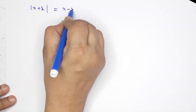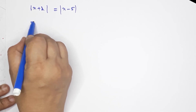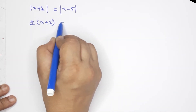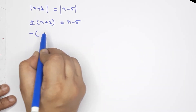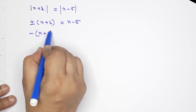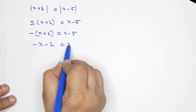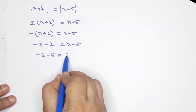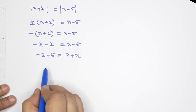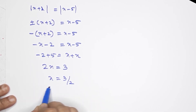Next problem: modulus of x plus 2 equals x minus 5. The plus condition: x plus 2 equals x minus 5 — does not exist. The minus condition: minus x minus 2 equals x minus 5, so minus 2 plus 5 equals x plus x, giving 2x equals 3, x equals 3 by 2.